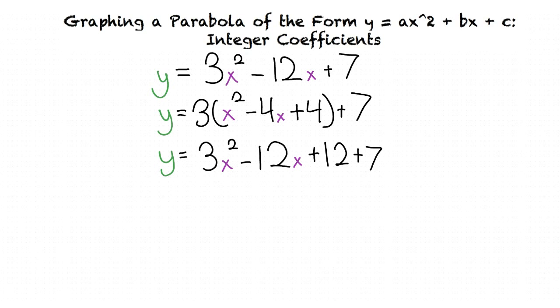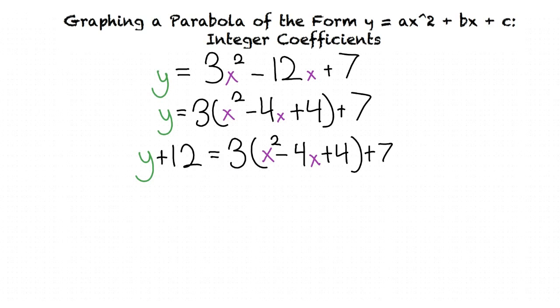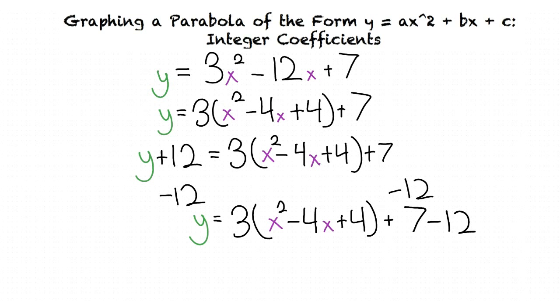In order to balance out our equation, we need to also add 12 to our left side. This gets us y plus 12 equals 3(x² minus 4x plus 4) plus 7. We then subtract 12 from both sides to get y equals 3(x² minus 4x plus 4) plus 7 minus 12. We then simplify this problem to y equals 3(x minus 2)² minus 5.